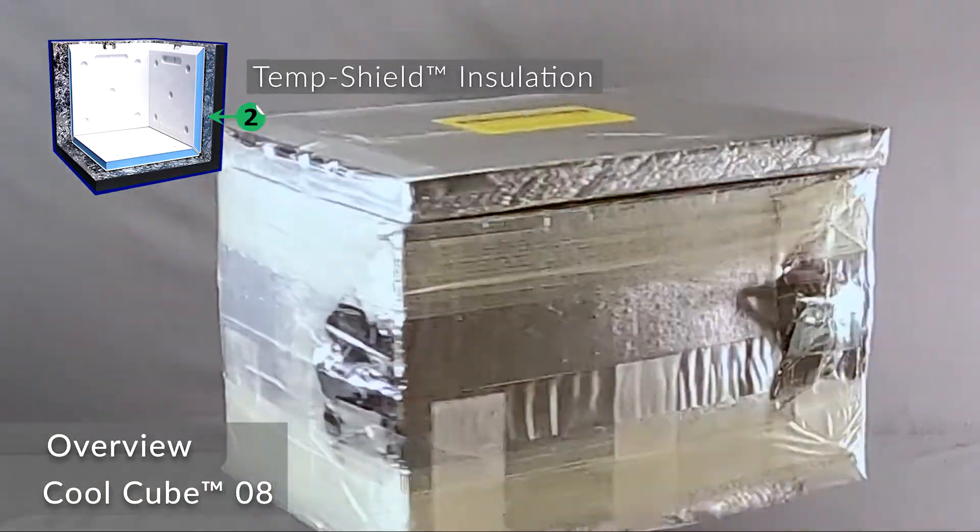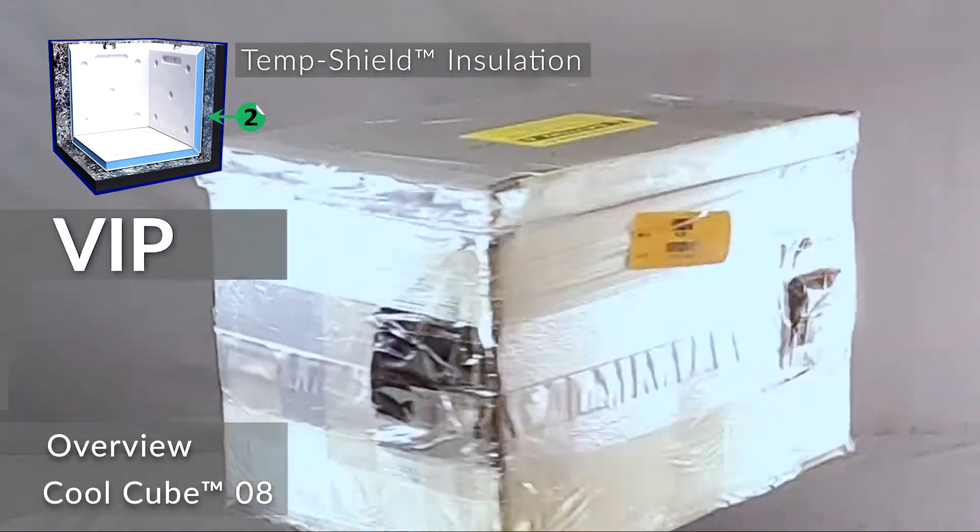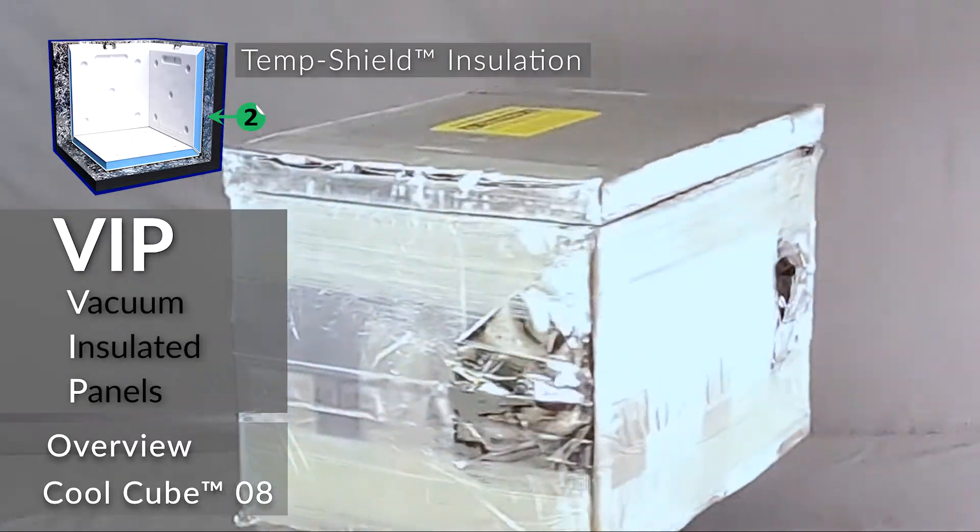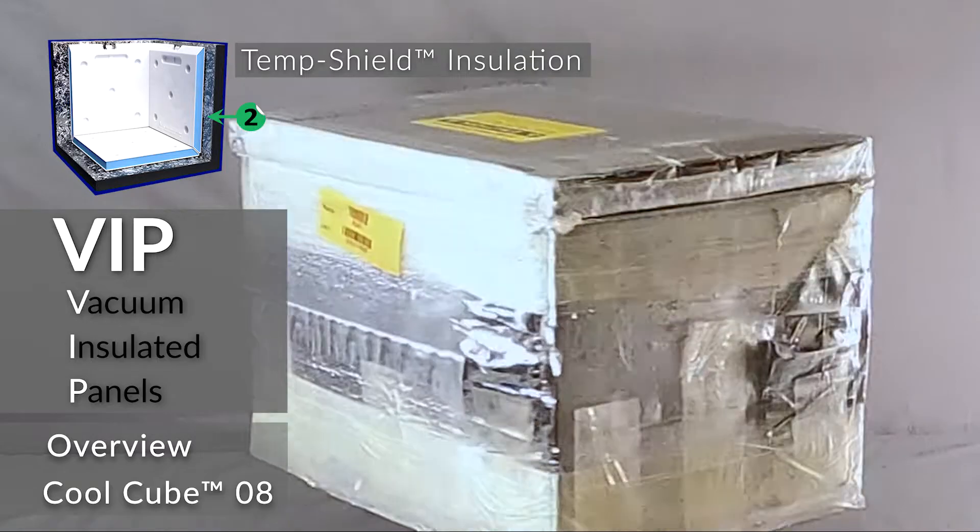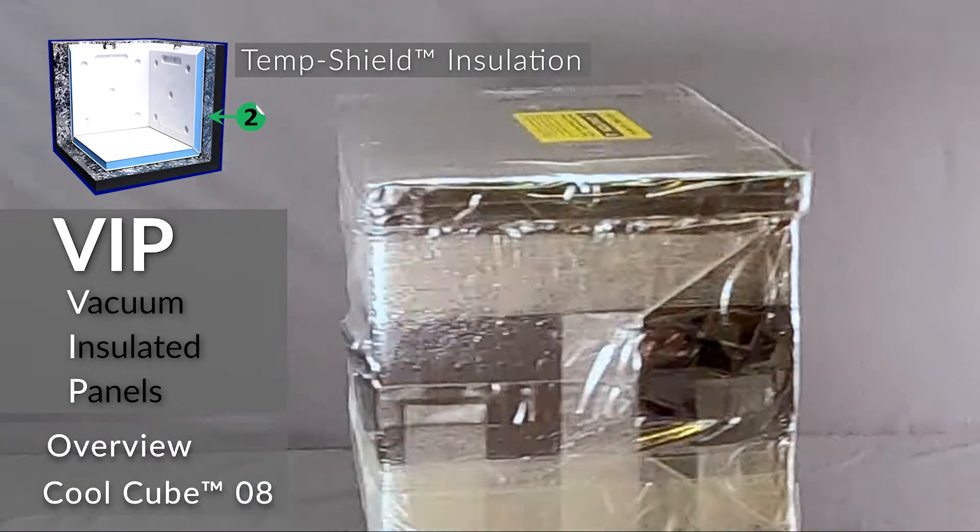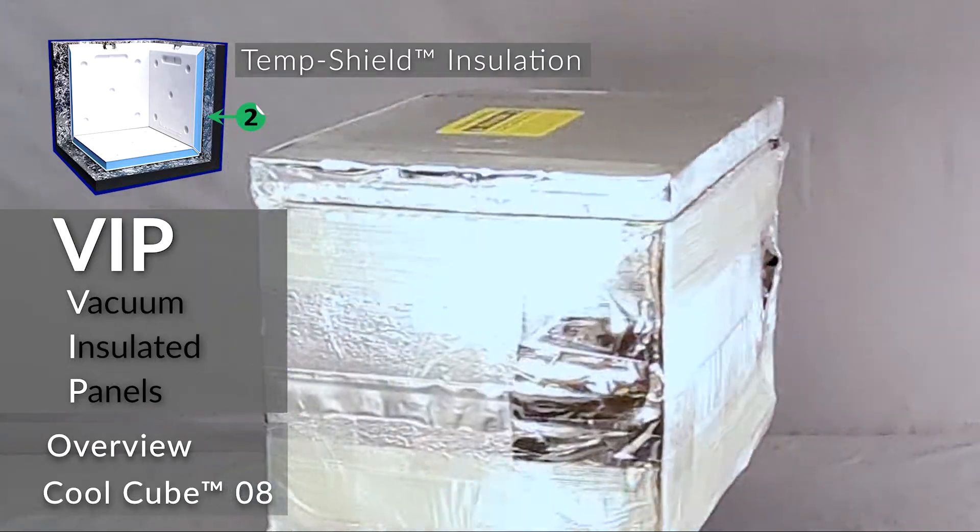Temp Shield Insulation. The Temp Shield Insulation system takes the form of VIPs, vacuum insulated panels. The VIPs are protected and assembled with a patented process, which is considered an advanced form of thermal protection, far superior to other insulation.